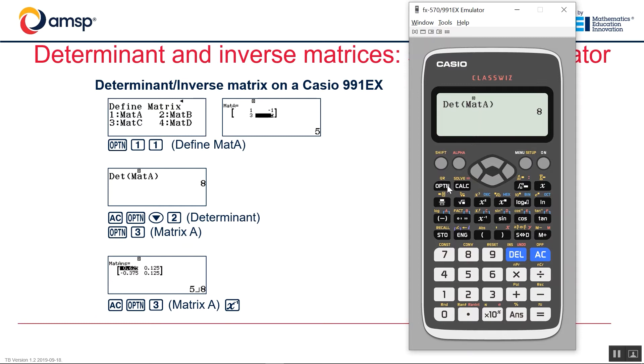Similarly option, select matrix A with number three and then do x to the power negative one to get the inverse. That will give me the inverse matrix. So that's the determinant and inverse on a scientific calculator.